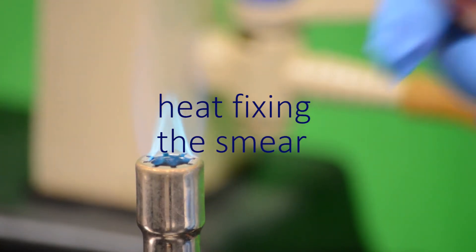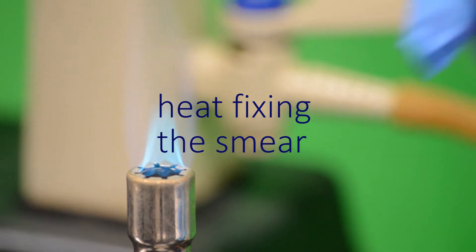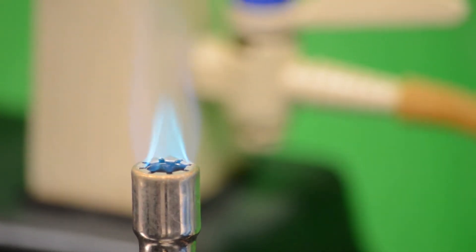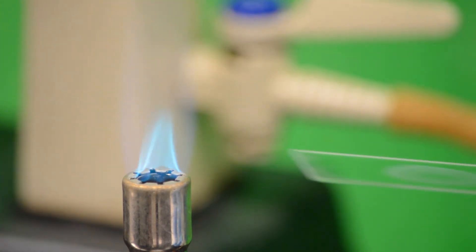Heat fixing the smear. Make sure you use a clothespin to hold one end of the slide. Carefully pass the slide through the Bunsen burner flame three times. This passage should be quick and lengthwise.